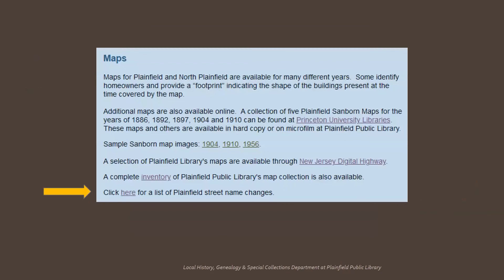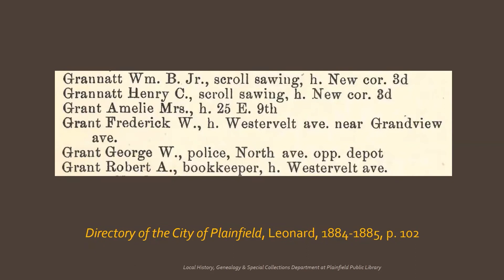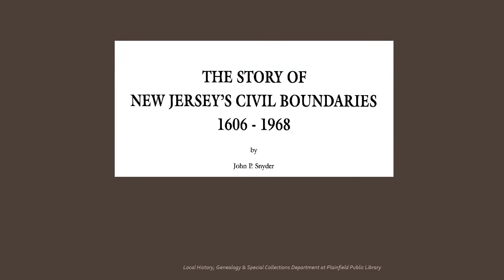Another issue is street name changes. A link to a list of street name changes can be found on the library website on the page for researching the history of a Plainfield home. This early directory is one that doesn't provide house numbers for all of the entries. Even in some of the directories not as old as this one, some addresses are given in relation to cross streets or major landmarks. We are also aware of a major renumbering of homes that took place in 1893. Searching for an address is just harder in the earliest years. Even some of the borders of the city have changed over the years, and a guide is available in the local history department and has been digitized and put online by the New Jersey State Library.